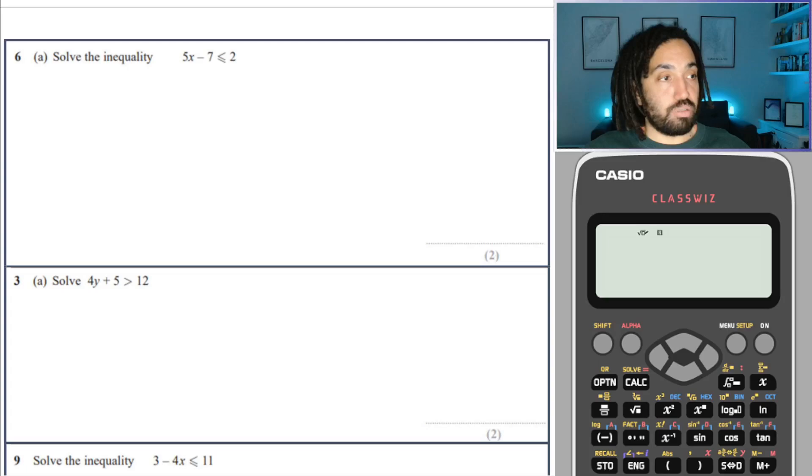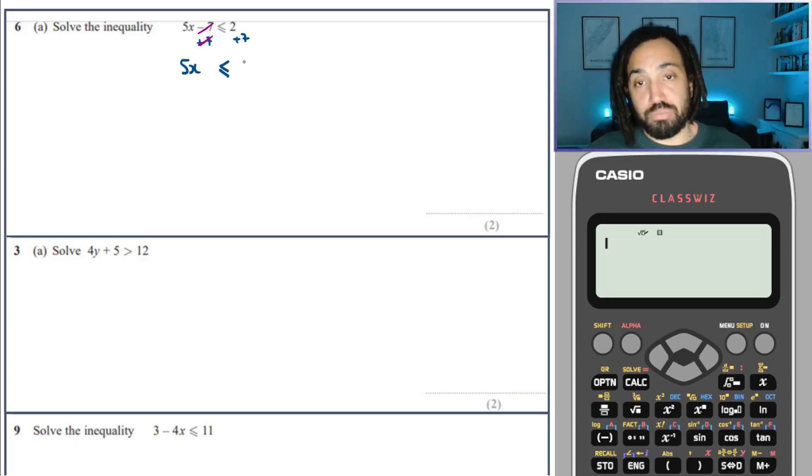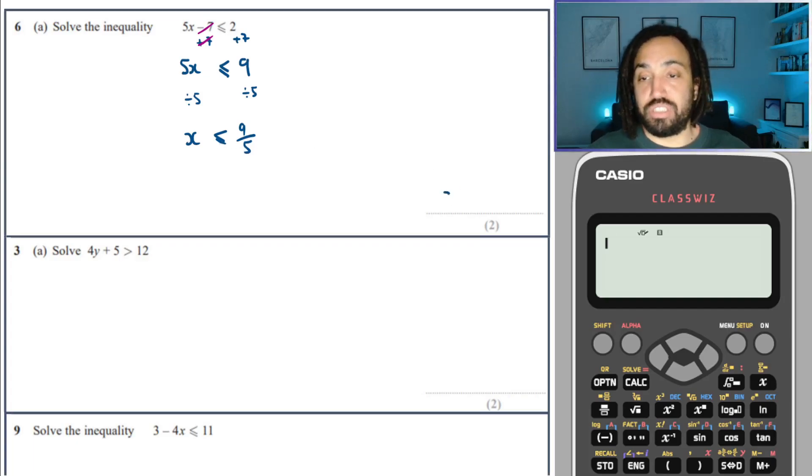Solve this inequality. So we're going to solve this just like we do an equation. In fact, we can almost just imagine that sign there being an equation sign, but we will keep it as a less than or equal to sign. So we have 5x and the first thing I want to do is plus 7 to both sides. So that way the minus 7 and the plus 7 cancel out there, leaving me with just 5x on the left. On the right 2 plus 7 is 9, so it's 5x is less than equal to 9. And then we're going to divide both sides by 5 to isolate the x. So I get x is less than or equal to 9 over 5.